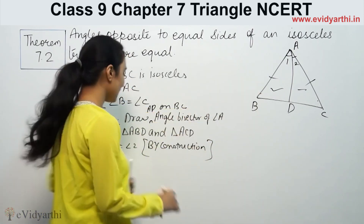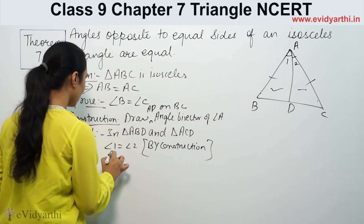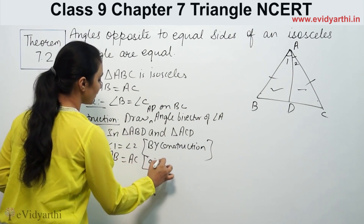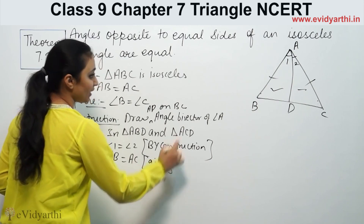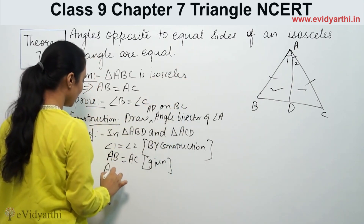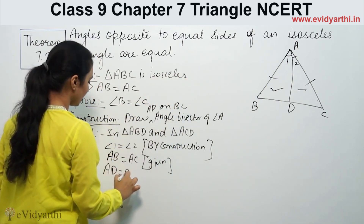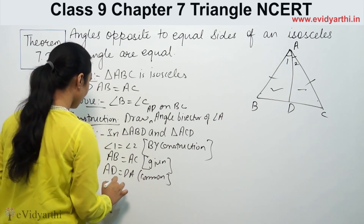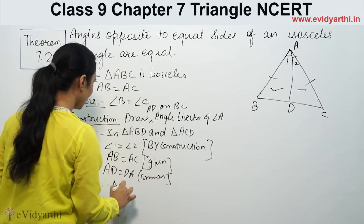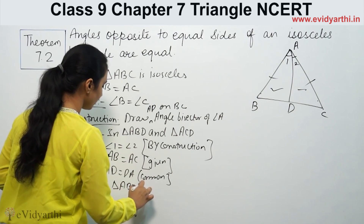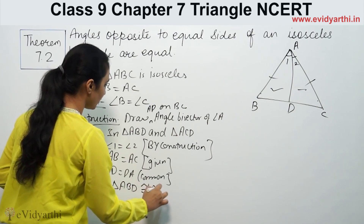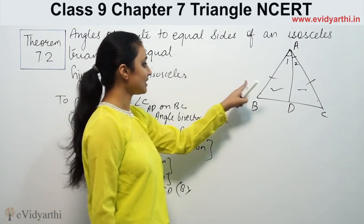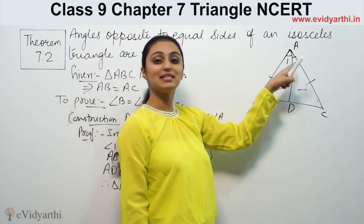Second, AB is equal to AC — this is given. Third, AD is common to both triangles. Therefore, triangle ABD is congruent to triangle ACD by SAS (Side-Angle-Side). So angle B equals angle C, which is what we had to prove.